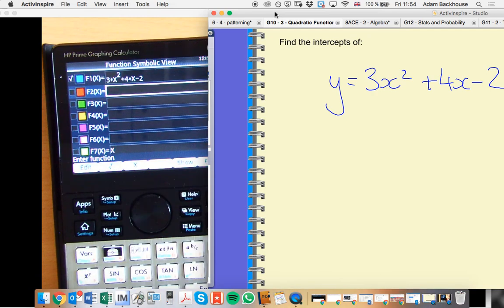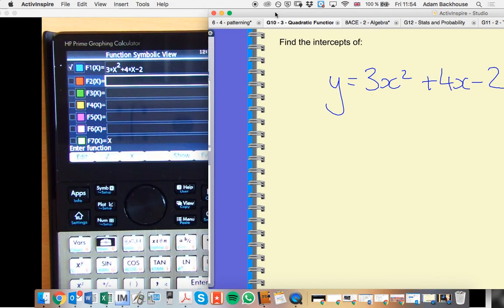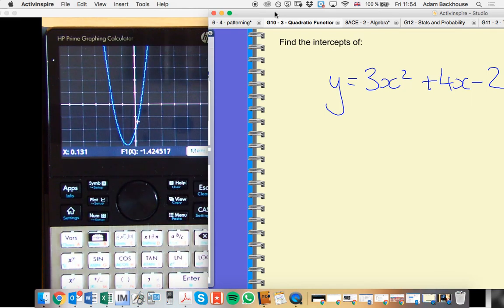So there we are, it's function 1. It should show up with a blue curve on my graph. So I'm going to hit plot and we can have a quick look at that. There we go.